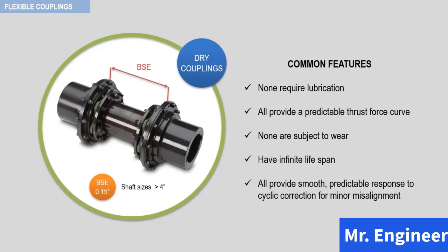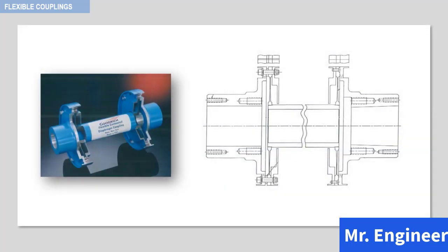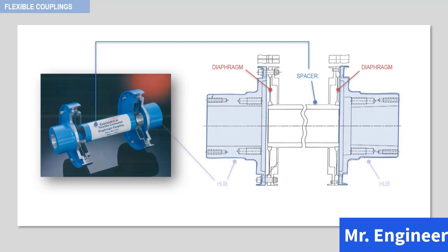A cutaway view of a single diaphragm spacer type coupling is shown here. This coupling is made of a spacer, diaphragms, and hubs. This type of coupling is commonly used for critical applications where axial end float values are less than 0.125 inches. If end float values are greater than this limit, a convoluted diaphragm or multiple type diaphragm must be used. During disassembly, care must be taken when removing the spacer to not scratch or dent the diaphragm element, as even a tiny scratch that penetrates the protective coating can cause a diaphragm failure.